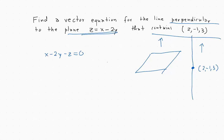So that will give us the vector <1, -2, -1> as a normal vector to the plane.